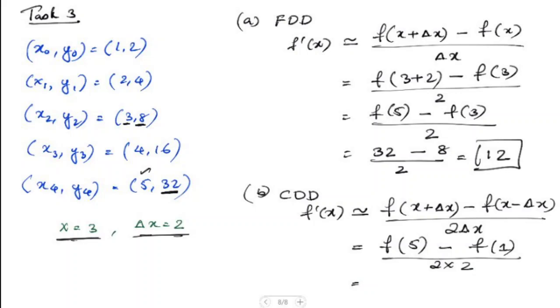So we have 32 here minus f(1), which means when x equals 1, the value of f is 2. So we'll take 2 here, divided by 2 times 2 is 4. We have 30 divided by 4, which equals 7.5. That's the solution for the central divided difference.